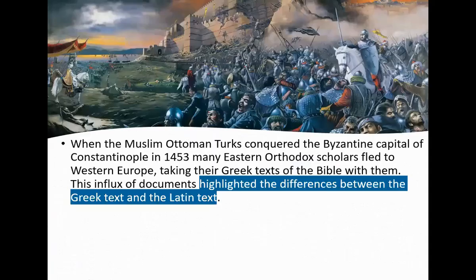In the 15th century, Constantinople — a really famous city, much larger than Rome at that time — fell to the Muslims. The Turks conquered it and subsequently renamed it Istanbul in the 20th century. A lot of Christian Orthodox scholars fled to Western Europe, and like any good scholars, they took their documents with them. So you had this big influx into Western Europe of these Greek scriptures.